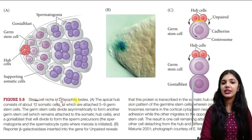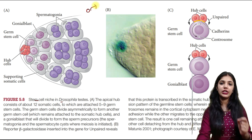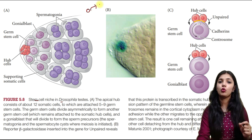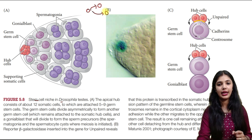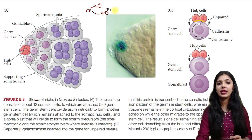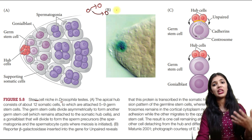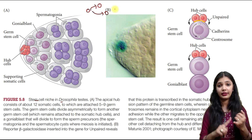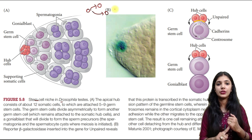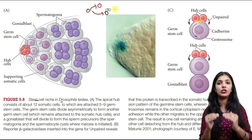Next we will discuss about the stem cell niche in Drosophila testes. The sperm stem cell present here has the ability of asymmetrical division — asymmetrical division means it will produce one stem cell and one differentiated cell. As we discussed, we need paracrine factors, juxtacrine factors, and cell adhesion molecules, as well as a niche which will provide a micro-environment to these factors.